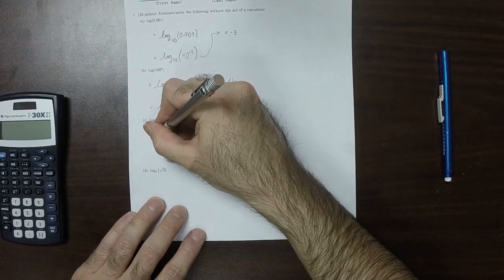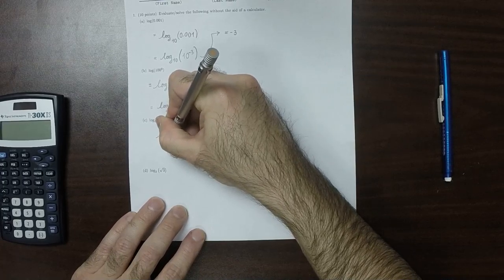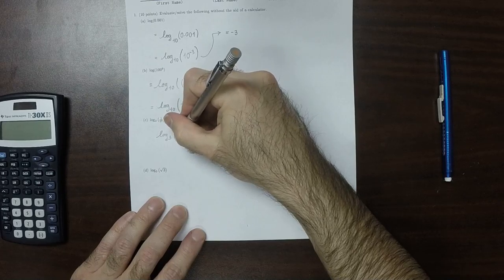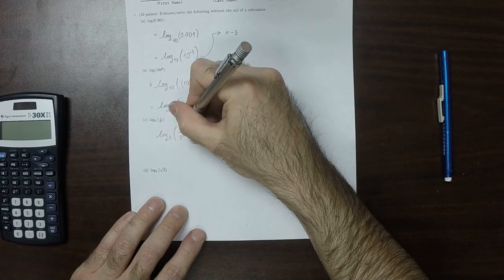So this is log base 3 of 1 over 27. But 27 is a power of 3, so that's 1 over 3 to the 3rd.